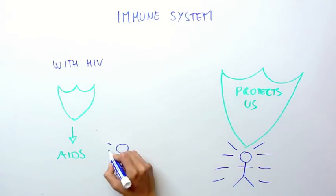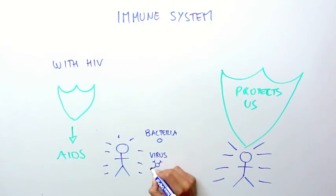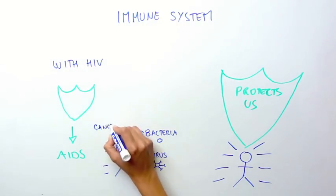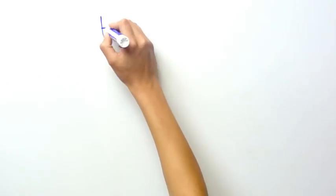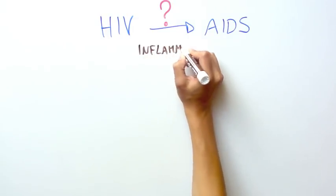AIDS occurs when the body's weakened defenses allow pathogens such as bacteria or viruses to infect the body, or diseases such as cancer to develop, and this can be lethal. We don't yet know all of the factors that influence progression to AIDS, but inflammation is thought to play a role.